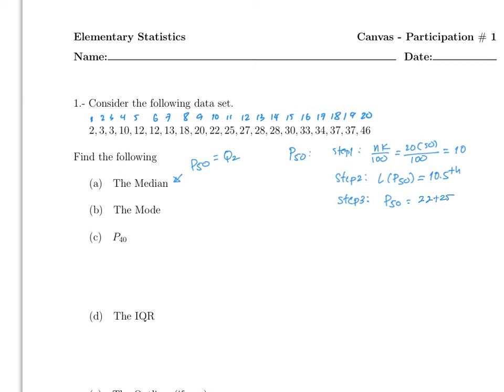So you add those two values and divide by two to get the median. That's 22 plus 25 divided by two. The result is 23.5, so 23.5 is the median for this particular problem.